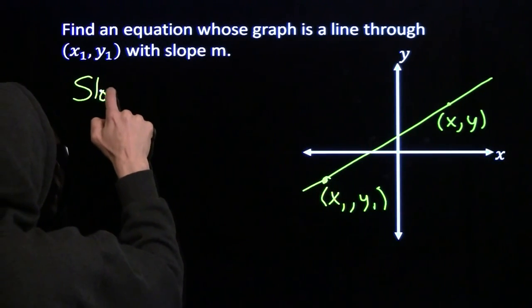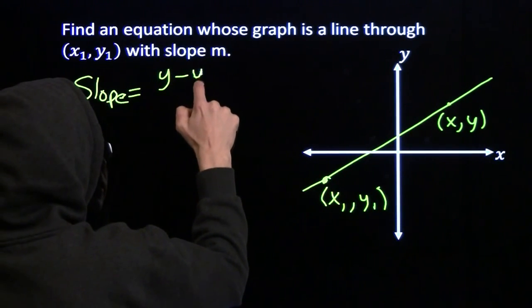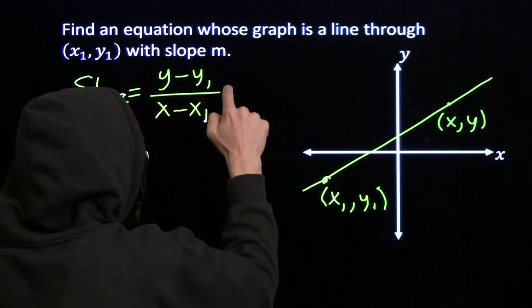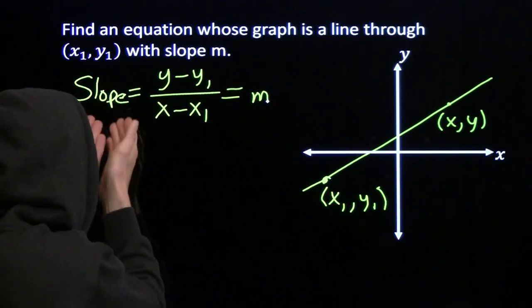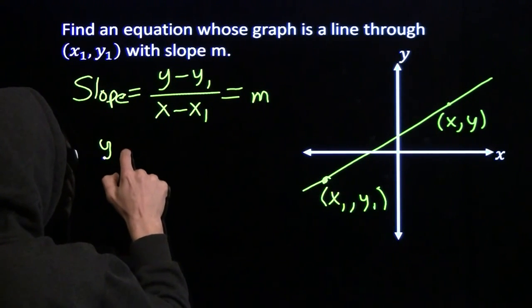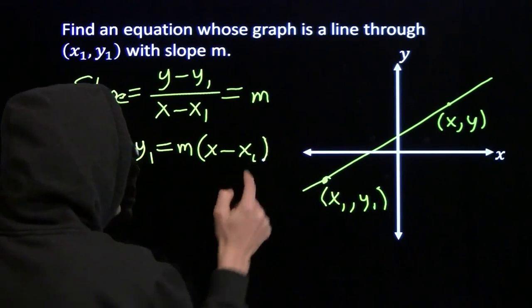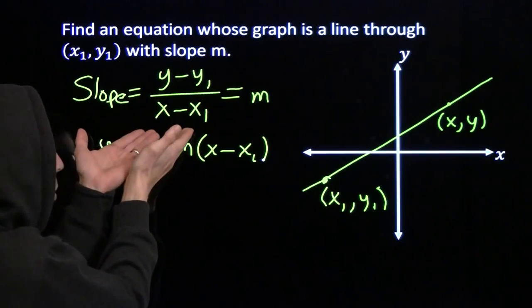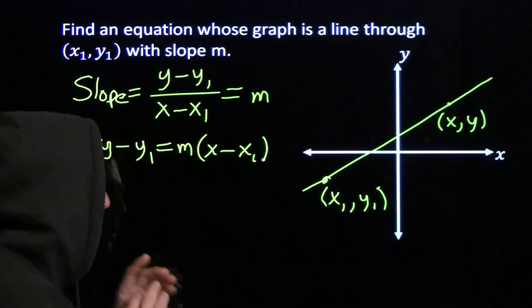So once again, we break out our definition of slope. Difference in the y-coordinates divided by the difference in the x-coordinates. And we know that the slope of this line has to equal m. This is what I meant. This is nothing new. You already know this. We're just using the slope to figure out what the equation is. Again, we multiply both sides by that denominator. We just clean this up a little bit. And there's our equation. We're finished. Just like that, we've got an equation whose graph is this line. And all we did was use something we already knew, the slope.